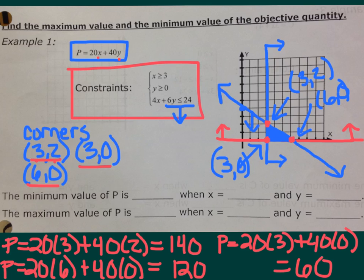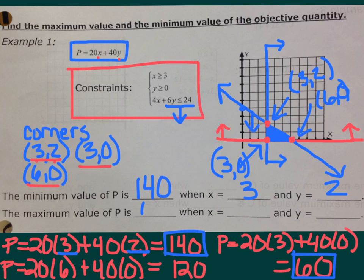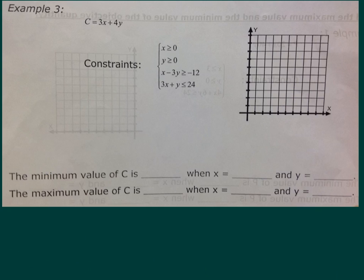The maximum value of P is 140 when x is 3 and y is 2. The minimum value of P is 60 when x is 3 and y is 0. Tomorrow we'll apply these types of problems to real-world situations — profit equations and similar contexts. Now we're doing example 3. I'm skipping example 2 from the printed notes since it's easy. Example 3 is a little tougher, so we'll do it together. The objective quantity is C equals 3x plus 4y.